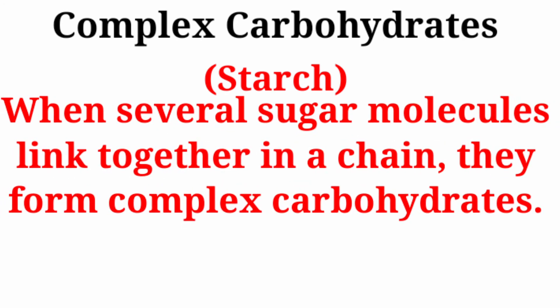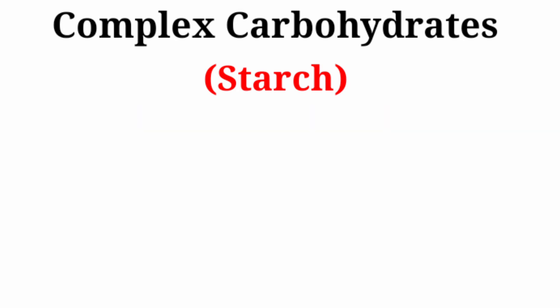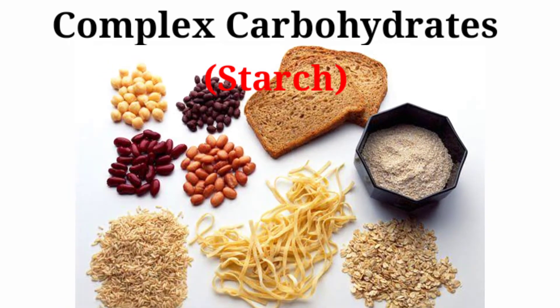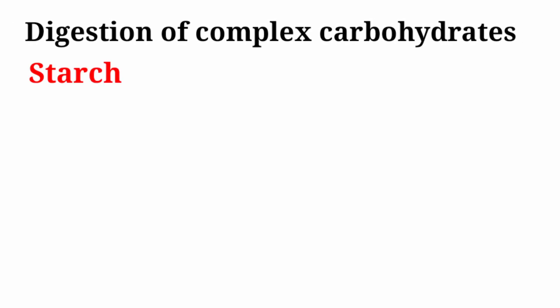Complex carbohydrates are formed when several sugar molecules link together in a chain. Examples include rice, beans, and peas. During digestion, complex carbohydrates break down into simple carbohydrates.